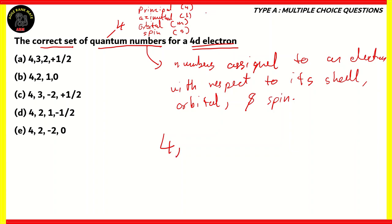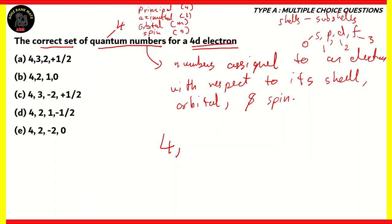How do we calculate the azimuthal quantum number? If you've studied atomic structure, you know that shells have various subshells. According to the current periodic table, we have 4 types of subshells: s, p, d, and f. The azimuthal quantum number assigned to s is 0, to p is 1, to d is 2, and to f is 3. Since we're dealing with a 4D electron, the azimuthal quantum number would be 2.